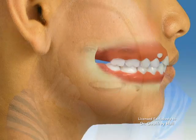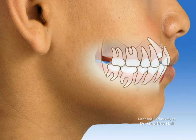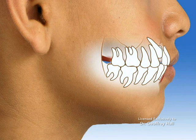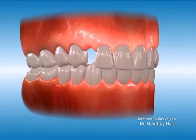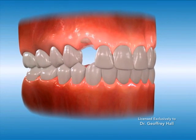Impacted teeth are oftentimes the culprits for multiple orthodontic problems. They can greatly affect not only the aesthetics of the smile but also the alignment of the teeth, impairing a functional bite. Impacted canines are a very common problem and are easily corrected with orthodontic treatment.